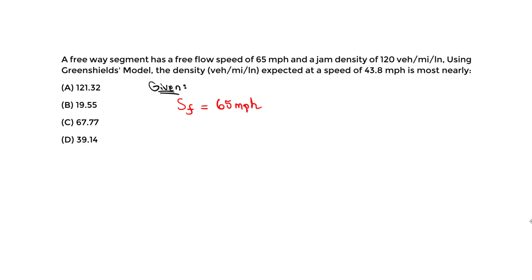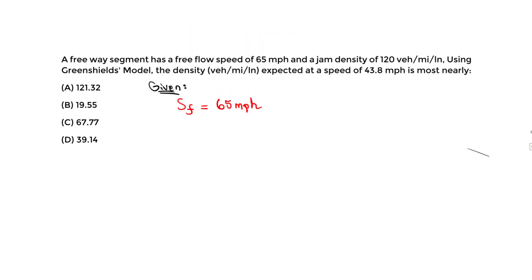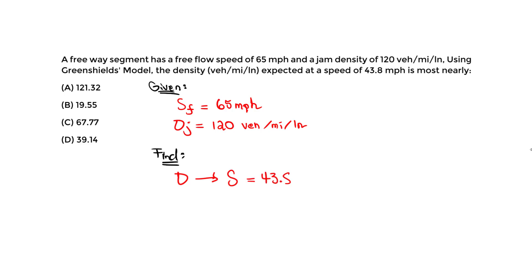We're also told the jam density Dj is 120 vehicles per mile per lane — we're looking at just one lane of this freeway segment. Using the Greenshield model, we want to find the density D at a speed S of 43.8 miles per hour.